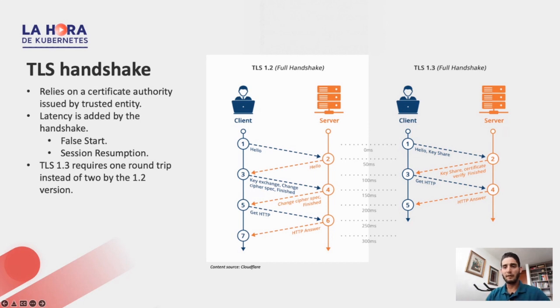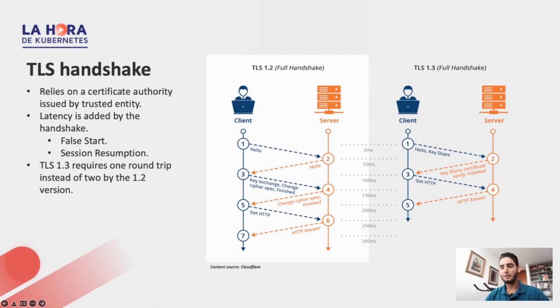That's more than enough to go to the next topic, which is Let's Encrypt. So what is Let's Encrypt? If you recall, TLS involves a certificate, and that certificate has to make sure that the server you're talking to is the one you're supposed to be talking to. That comes from something called the certificate authority, which is an entity trusted by browsers and clients — whoever has a certificate from this authority is someone we can trust.